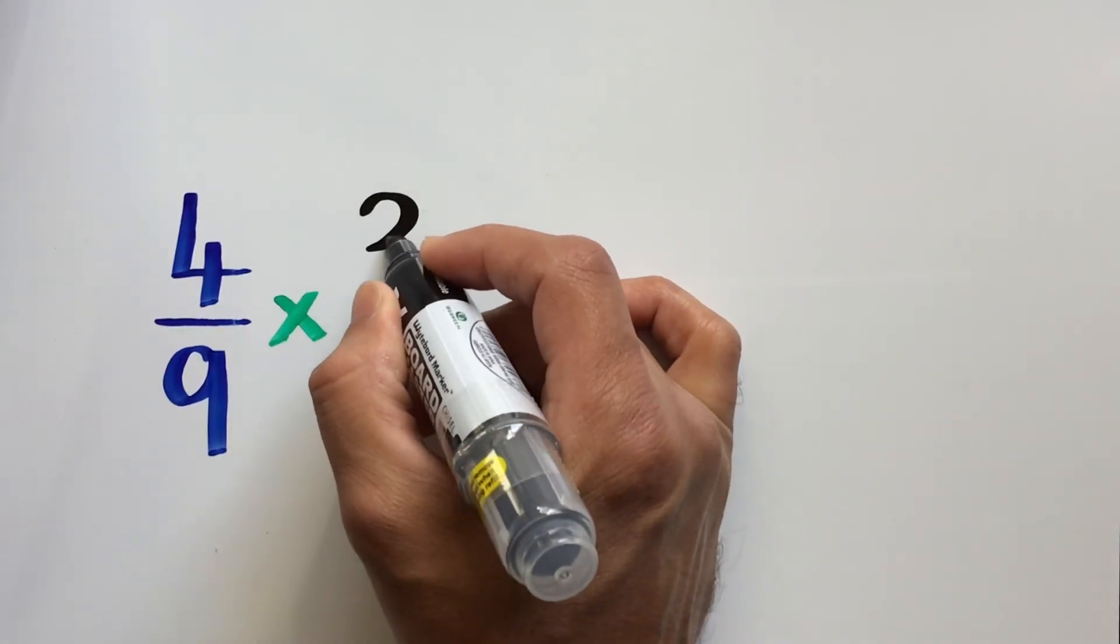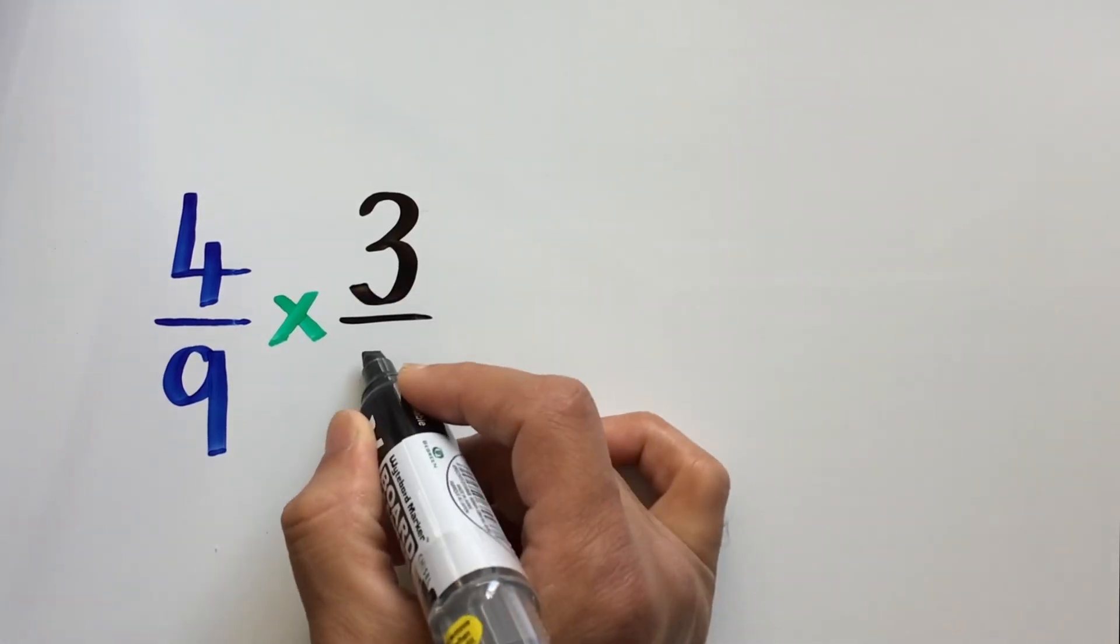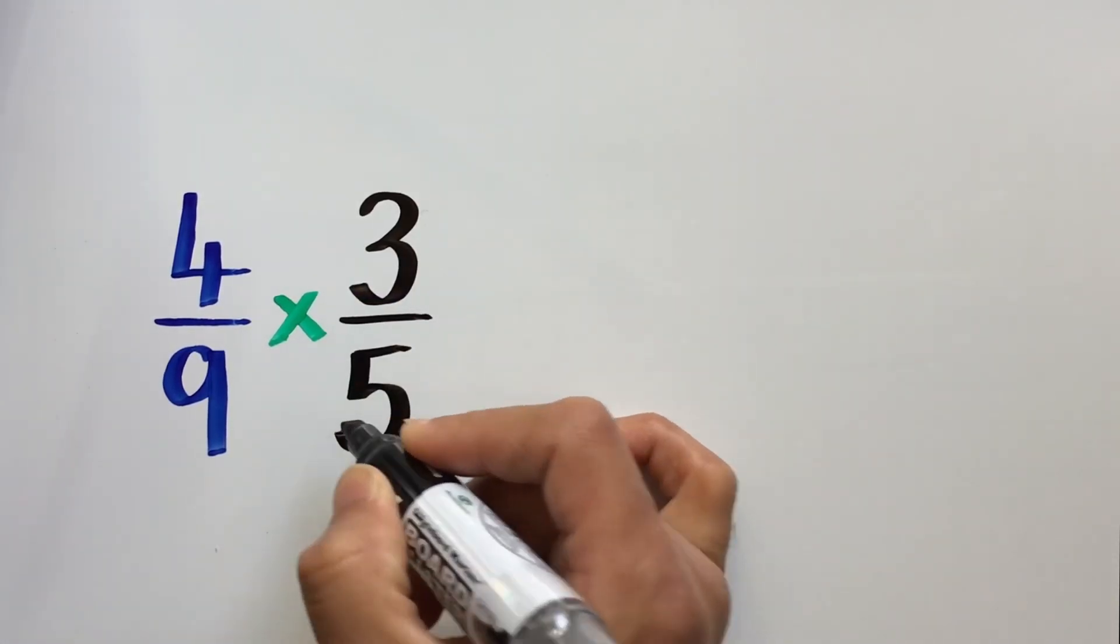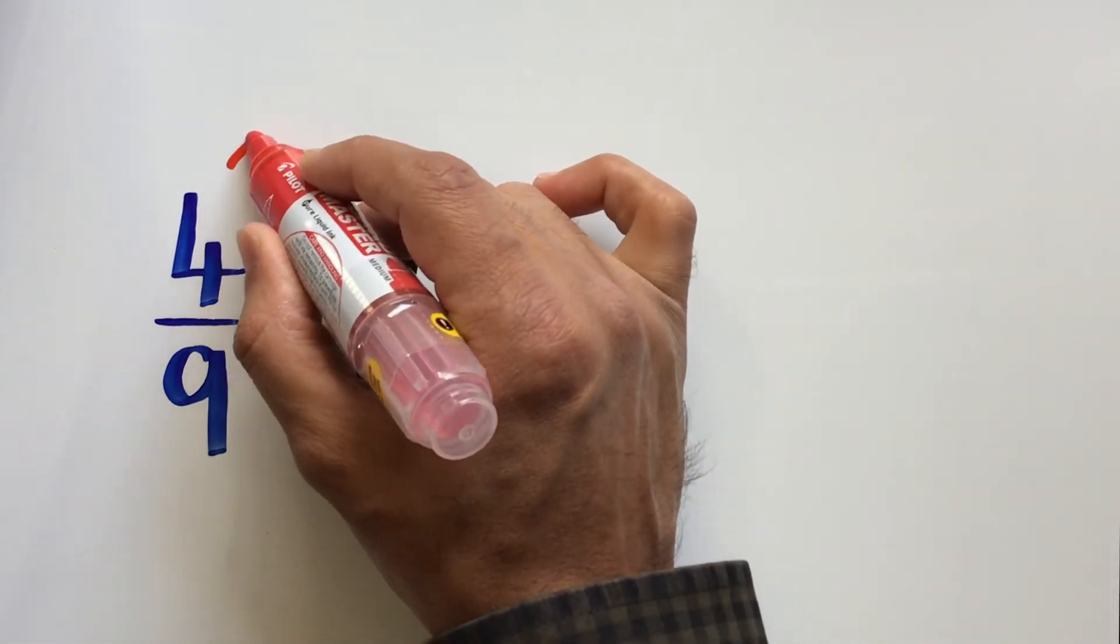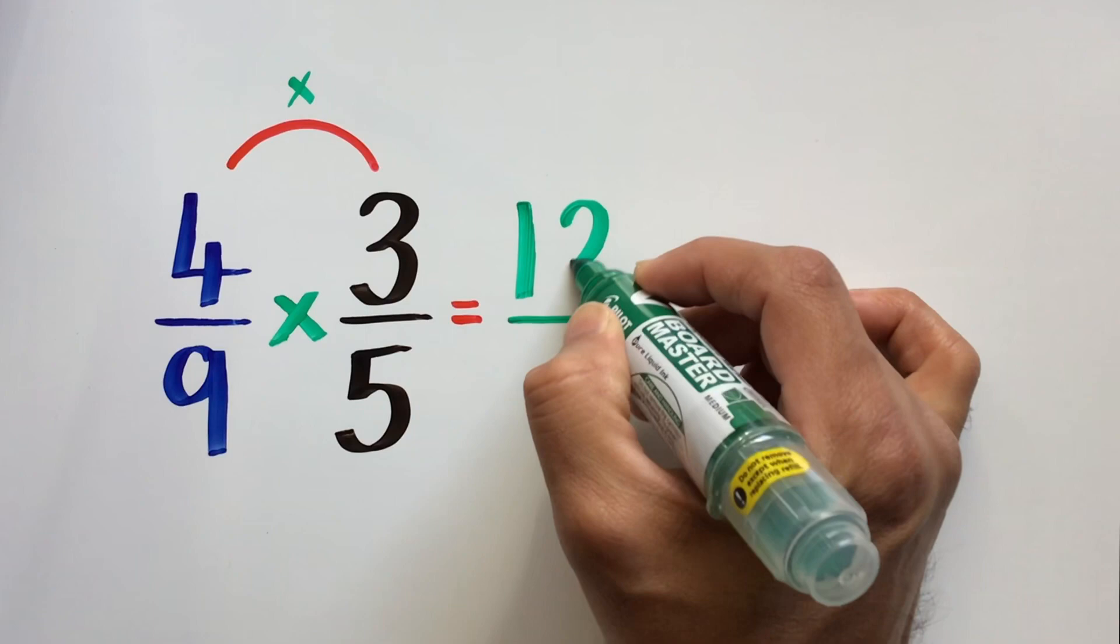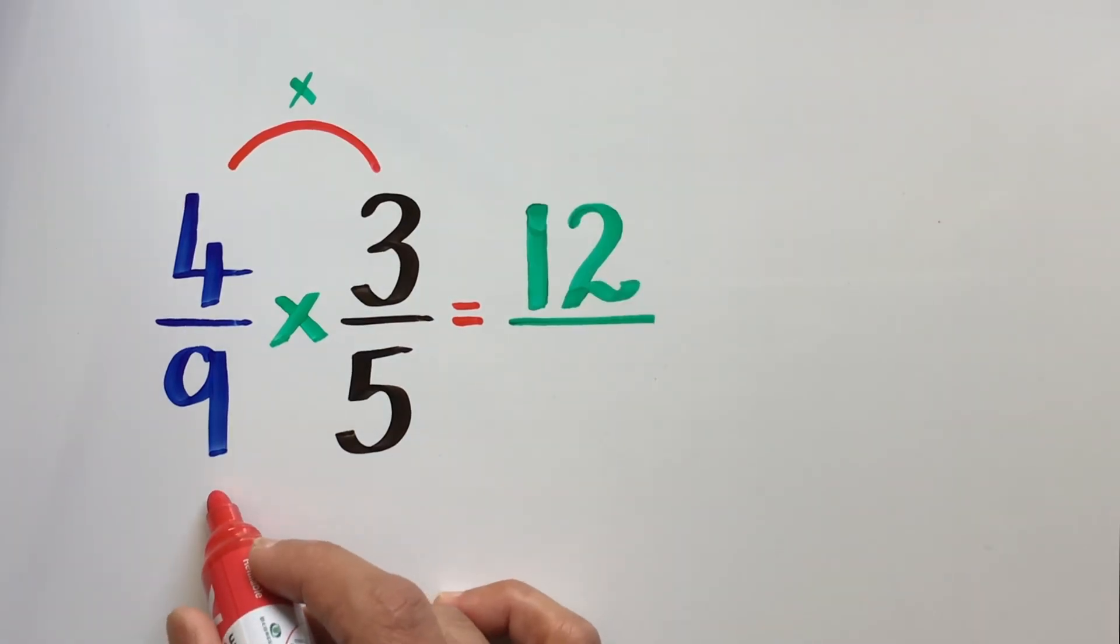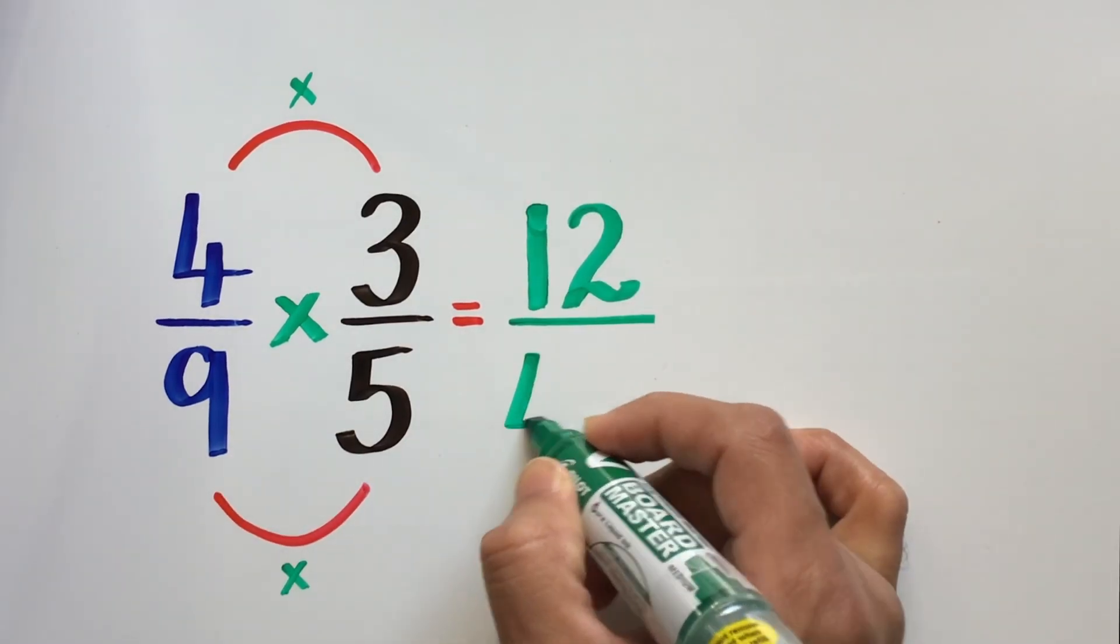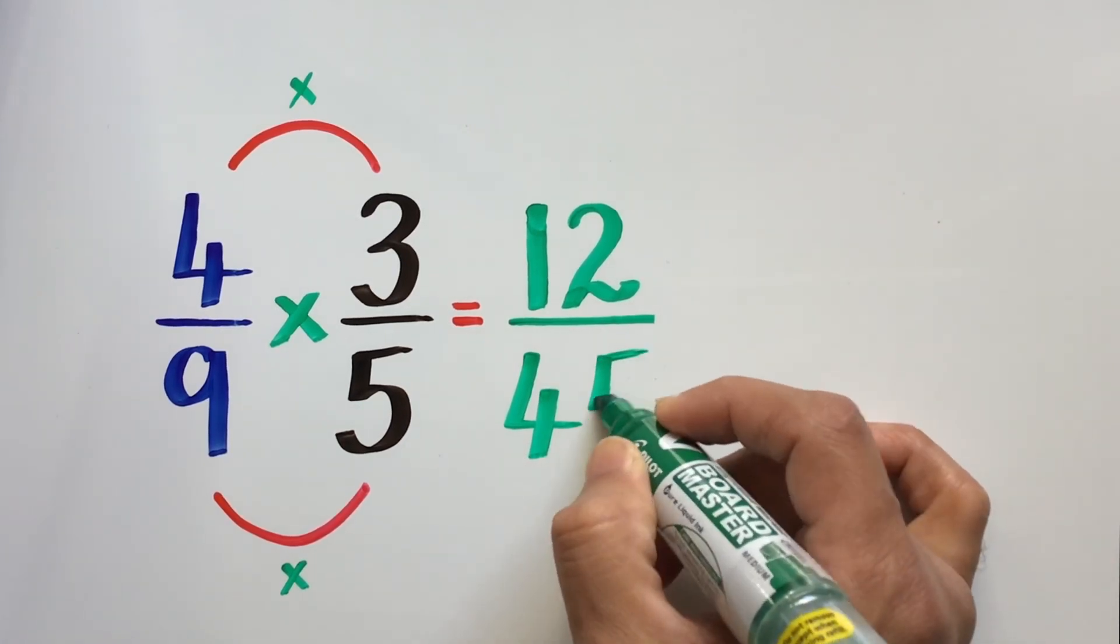In this example, we need to multiply two fractions, 4 over 9 with 3 over 5. We begin by multiplying the top numbers or the numerators. 4 times 3 gives us 12, and then when we multiply the denominators 9 and 5, we get the new denominator as 45.